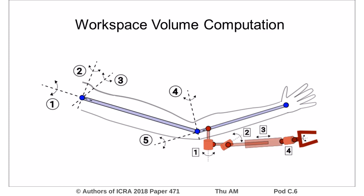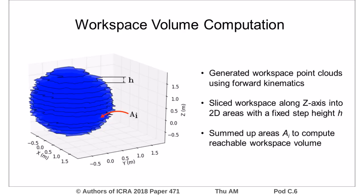For this prototype, we analyzed the workspace volume enhancement it provides the user. In order to compute this, we modeled the human arm as two links with a total of five degrees of freedom, and a combined human-robot model with nine degrees of freedom, excluding the gripper. We generated workspace volume point clouds for these models using forward kinematics, then divided them into 2D areas by slicing along the z-axis with a fixed step height h. Finally, we summed up these areas to compute the reachable workspace volumes.